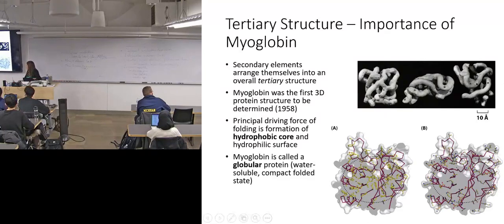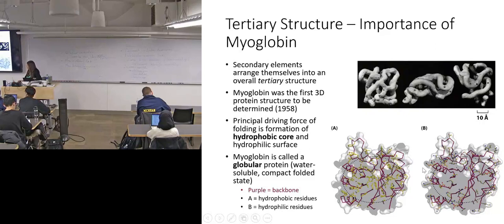So here's another view of it. What we have here, the purple is our backbone. In A, on the left, it's showing where all the hydrophobic residues are, and you can kind of see they're all pointing to the interior, and then all the hydrophilic residues are shown in B, and again, they're all these little exterior pieces that stick out to be able to interact with water. Water surrounds everybody.